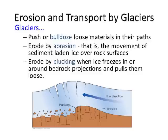Ice also transports material through rotational slip and bulldozing. Rotational slip is when the glacier moves down and out of the corrie. It occurs when gravity pulls the ice away from the back wall of the corrie. Bulldozing is when the glacier pushes rocks and rubble in front of it as it moves down the valley.